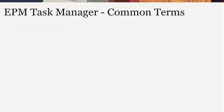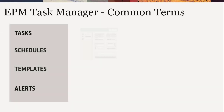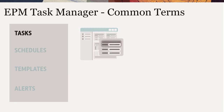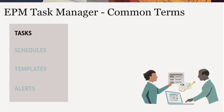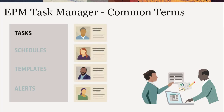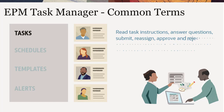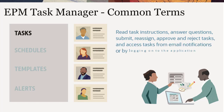Let's go over common terms used in Task Manager. Tasks are a unit of action in the business process. They represent the lowest level of activity tracking that can be reported on within a business process. Service administrators empower users to find tasks and assign users to tasks. Users can read task instructions, answer questions, submit, reassign, approve, and reject tasks, and access tasks from email notifications or by logging on to the application.